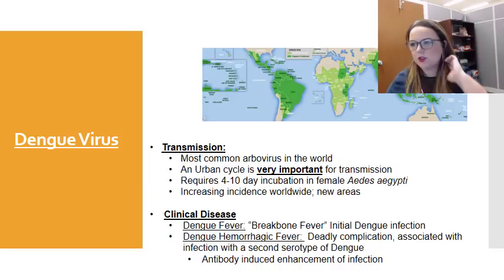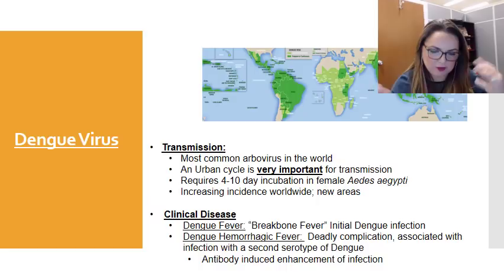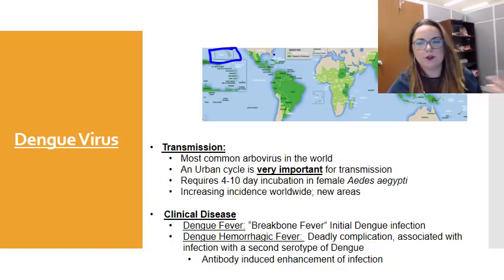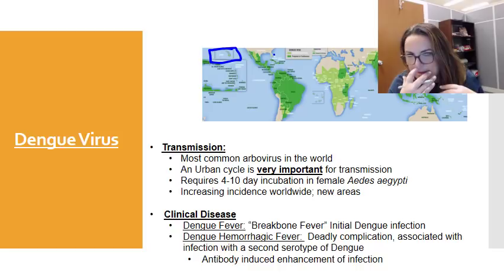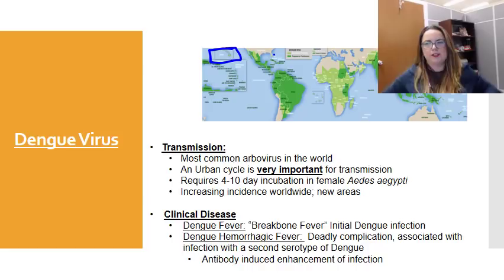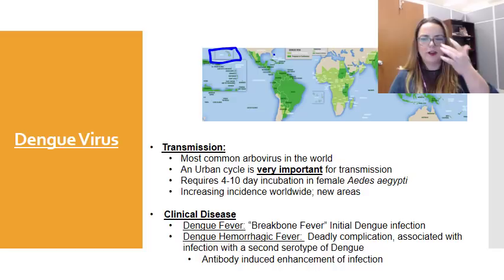The most common flavivirus in the world is dengue virus — it is also the most common arbovirus. It has a huge geographic map and does creep up into the US, though it's unlikely to become a major epidemic here because we lack the jungle sylvatic cycle. However, you can find it in Texas, Southern California, Florida — specifically the Florida Keys. Key West has had an ongoing outbreak for about five to six years, and the infection rate is increasing as dengue spreads to new areas.